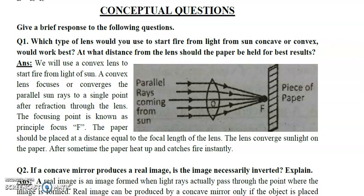We use a convex lens because it is a converging lens. We position it so that the piece of paper is at its focal point. Parallel sun rays converge to a single point after refraction through the lens — this focusing point is the principal focus. The paper should be placed at a distance equal to the focal length of the lens. The lens converges sunlight on the paper, the paper heats up and catches fire.